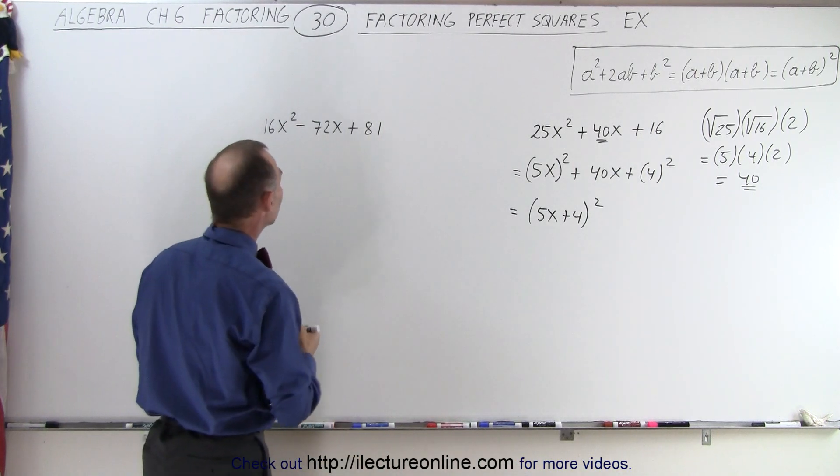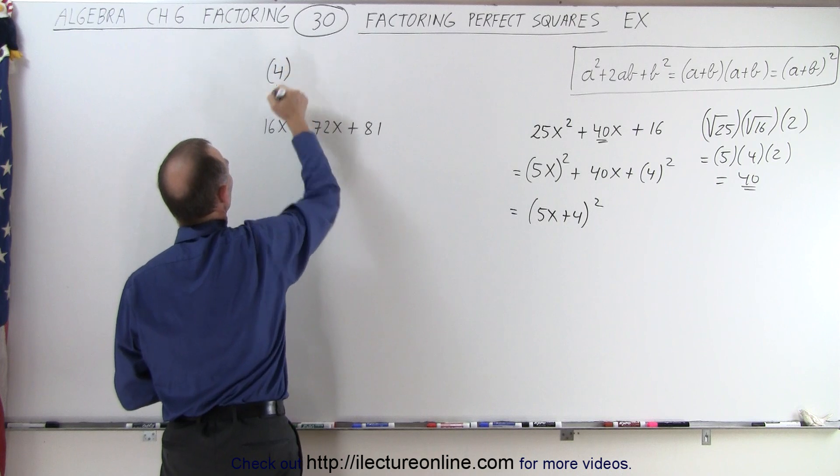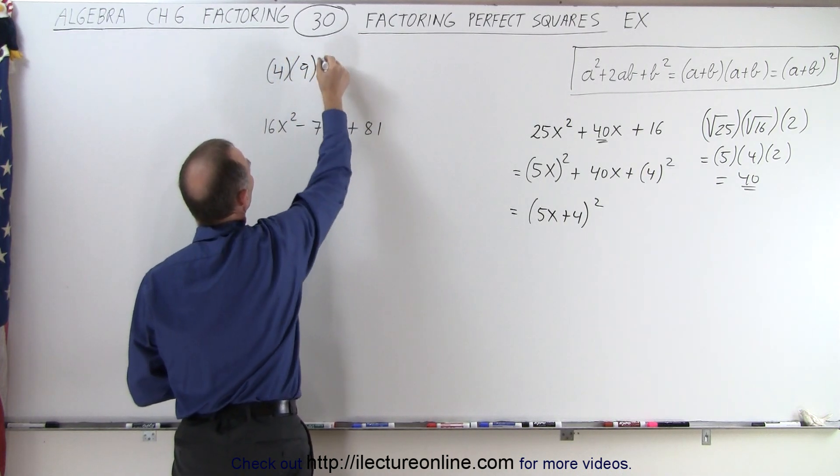Same over here. We can realize here that 4, which is the square root of 16, multiplied times 9, which is the square root of 81, times 2.